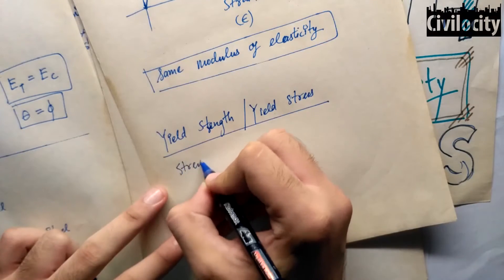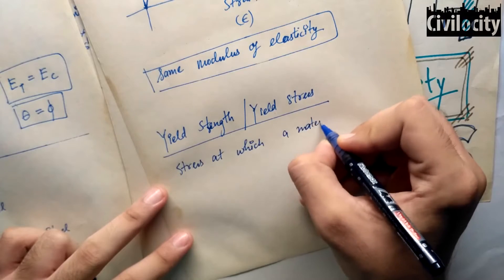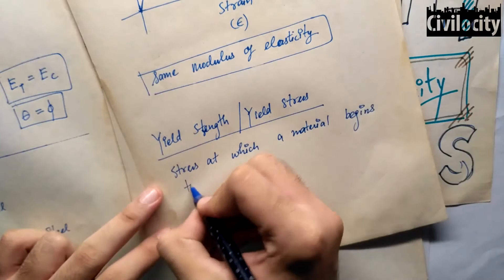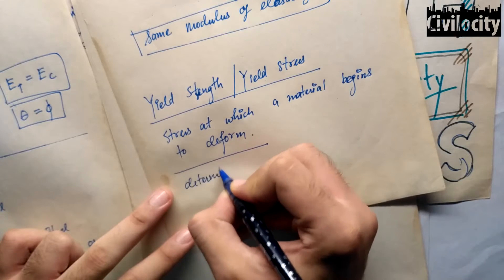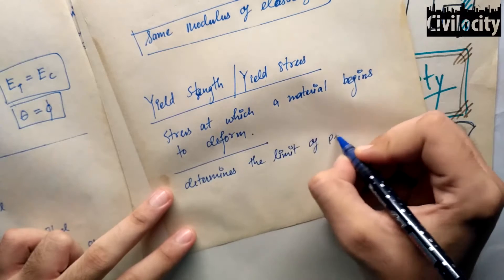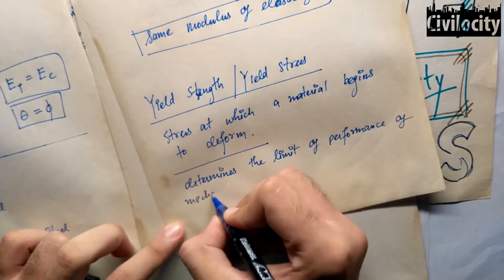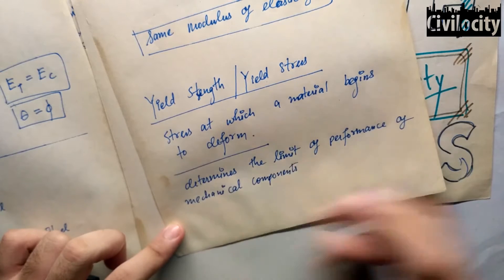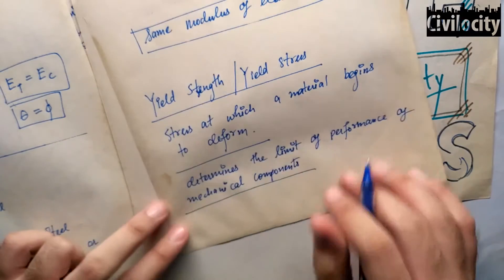Yield strength or yield stress is the property of a material. It is defined as the stress at which a material begins to deform plastically, whereas the yield point is the point where non-linear deformation begins. Before this yield point, the material deforms elastically and will return to its original shape when the applied stress is removed. Once the yield point is passed, some fraction of the deformation will be permanent and non-reversible. This yield point determines the limit of performance of mechanical components, since it represents the upper limit to the forces that can be applied without permanent deformation.